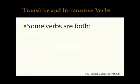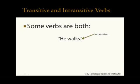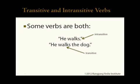Some verbs can be both transitive and intransitive. For example, the verb 'walk' in English can function intransitively when we say 'he walks' — he is the one doing the walking. However, it can also function transitively if we say 'he walks the dog,' where the action of walking is being applied to a different object, the dog.